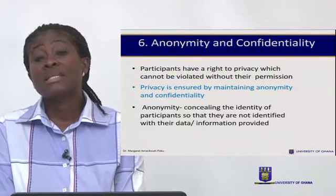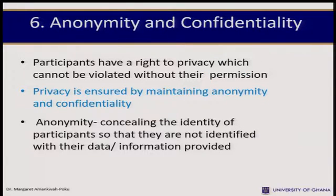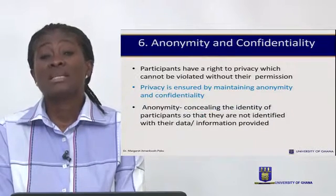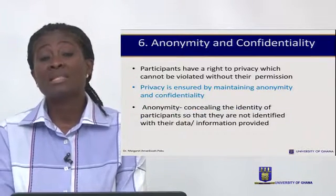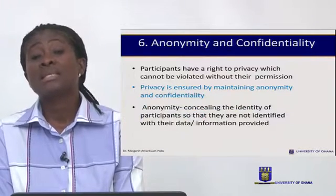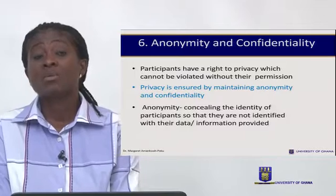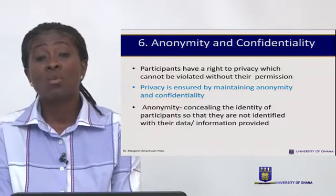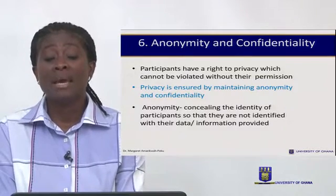Another guideline is anonymity and confidentiality. The privacy of participants should not be violated when they are part of research, and this involves maintaining anonymity and confidentiality. Anonymity is about concealing the identity of participants so that whatever information they give is not related to their identity — whatever information they provide, we cannot identify them with that information. That is why when doing research we use code numbers instead of participants' names: participant 1, participant 2, participant 101, and so on.